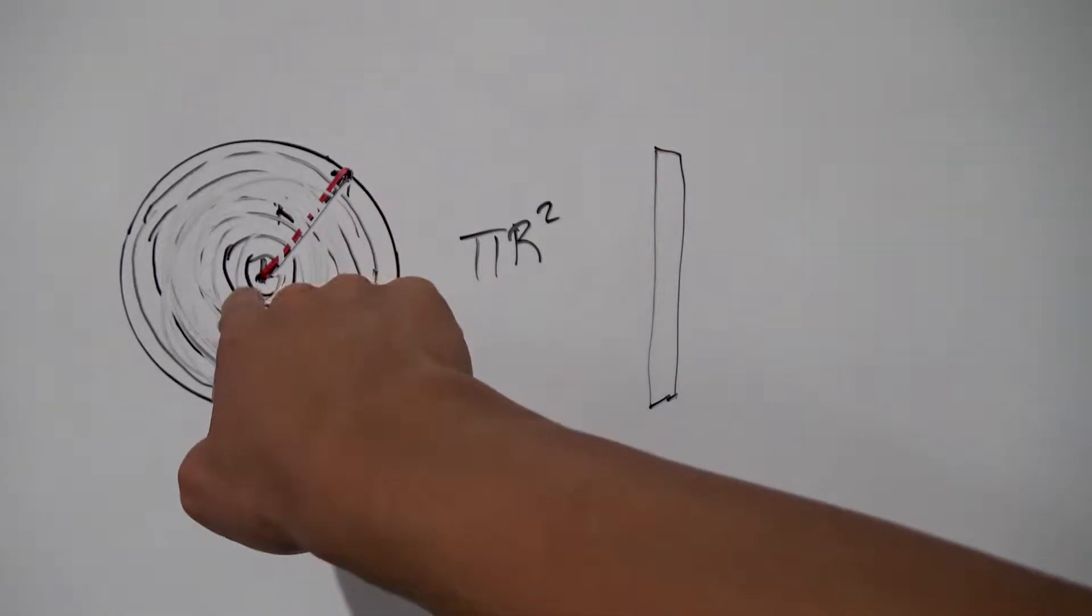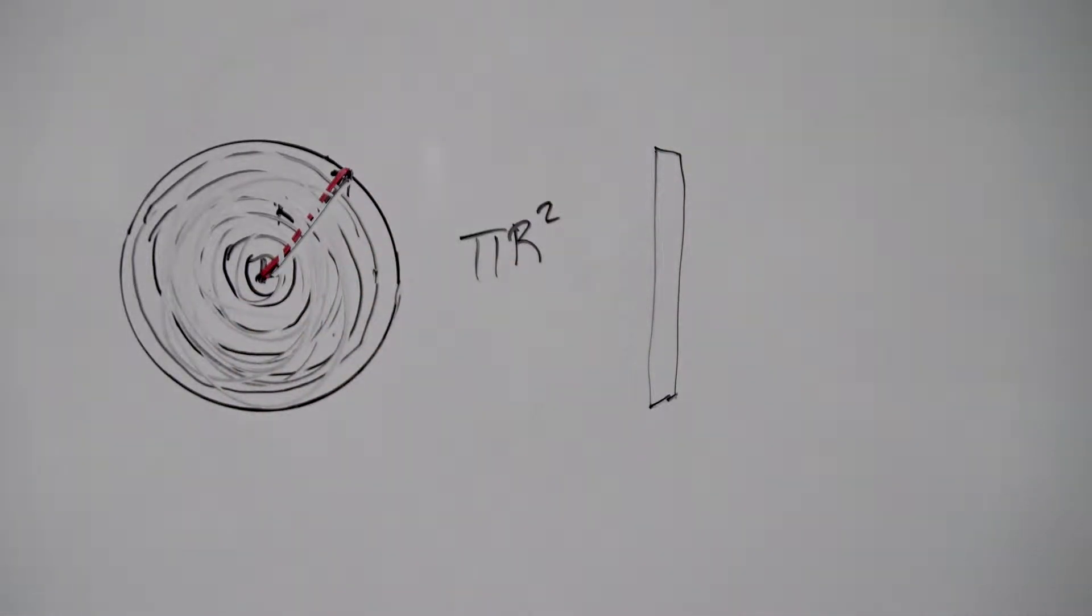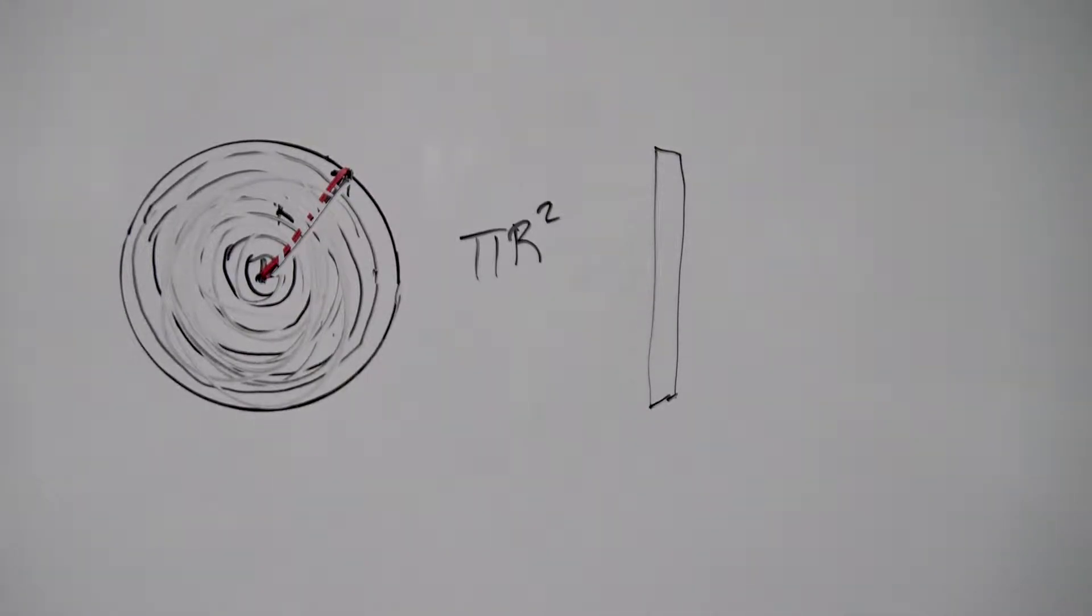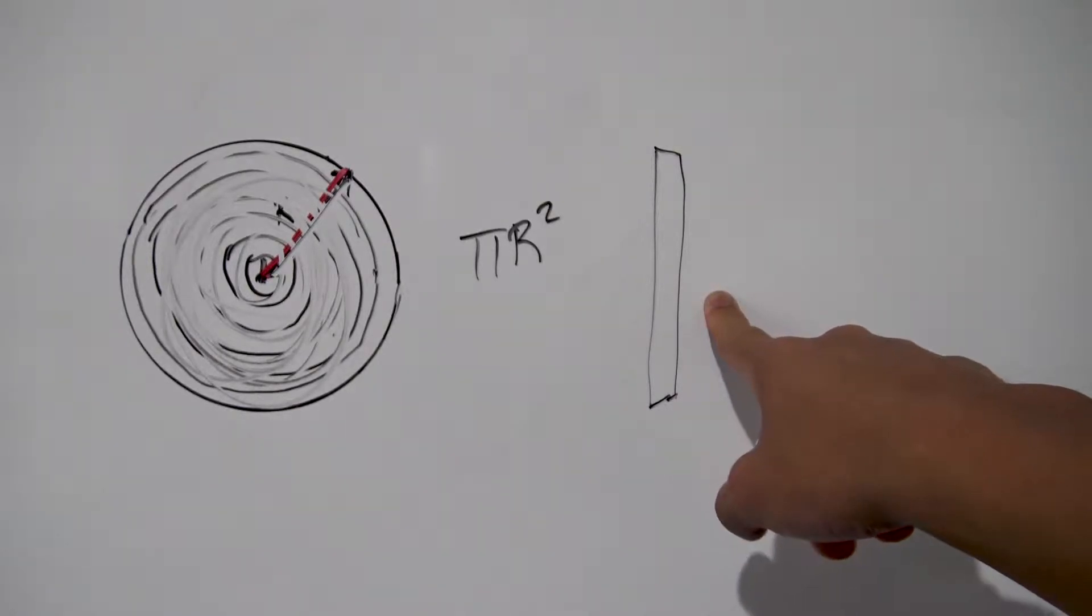And if we do the exact same cut along this red line and unfold each of these little rings here, our trapezium here will get closer and closer to the shape of a rectangle. And why is this the case you might ask?